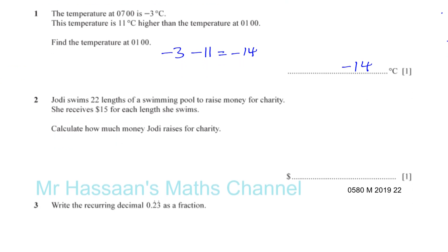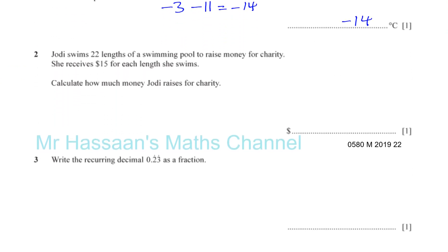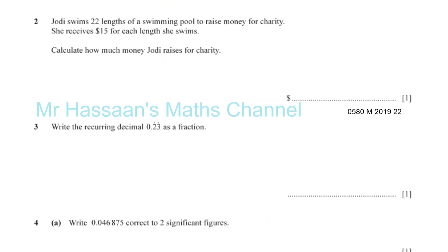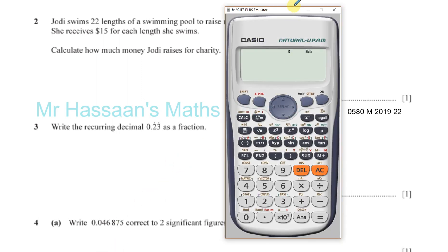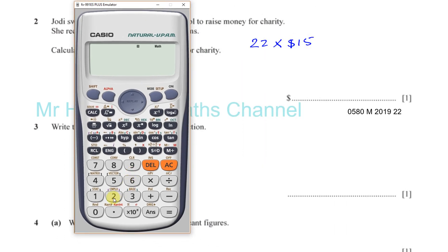Number two: Jodie swims 22 lengths of a swimming pool to raise money for charity. She receives $15 for each length that she swims. Calculate how much Jodie raises for charity. So 22 lengths, each length is $15. 22 multiplied by 15 gives us $330.